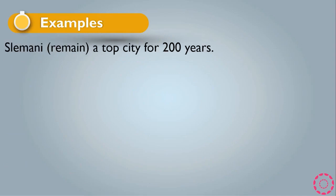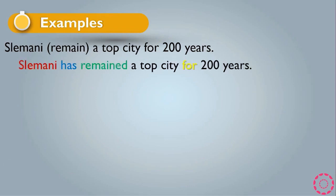Example: 'Slymani remain a top city for 200 years' — change to present perfect. It becomes 'Slymani has remained a top city for 200 years.' We use has because Slymani is a thing or city — a singular subject. Remain changes to remained as the past participle, and for is used because 200 years is a duration of time.